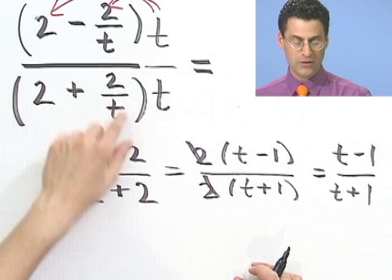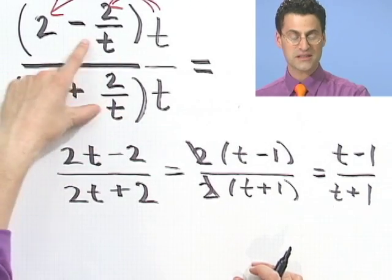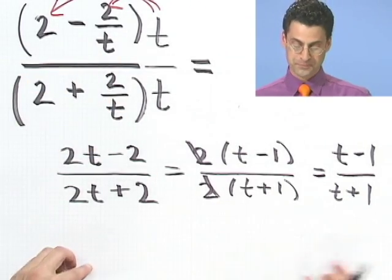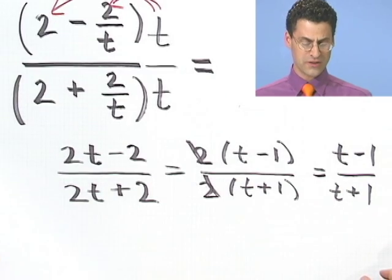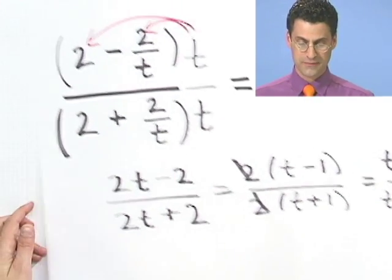Same answer. I think actually a little bit easier, because I didn't have to get common denominators, combine, invert, and multiply. I just had to find a multiple that would cancel out all the bottoms. So that's sort of another way of doing it.